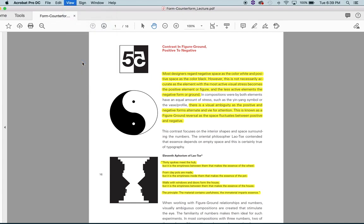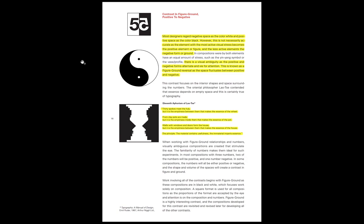I just want to talk a little bit about form and counterform as you're working on type exercise one. I've seen a few people that have already started to turn this in, and there's some good stuff. I want to run through the importance of form and counterform, or positive and negative space, as it relates to type, because typography has as much to do with spacing as it does the type itself. Some people would say typography is really about space more than anything.